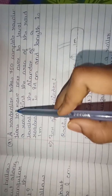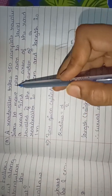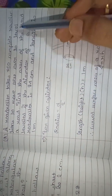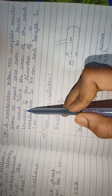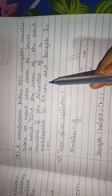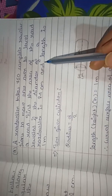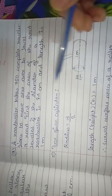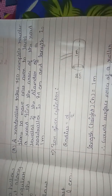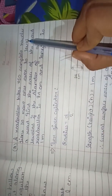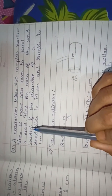Question 9. A road roller takes 750 complete revolutions to level a road. Find the area of the road leveled if the diameter of the road roller is 84 centimeters and length is 1 meter. A road roller is cylindrical in shape and takes 750 total revolutions to complete leveling.